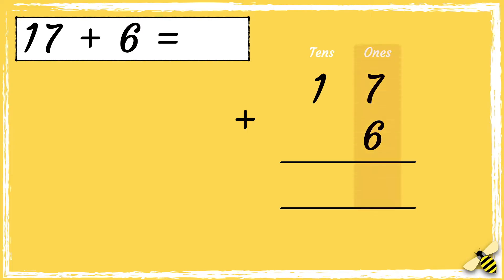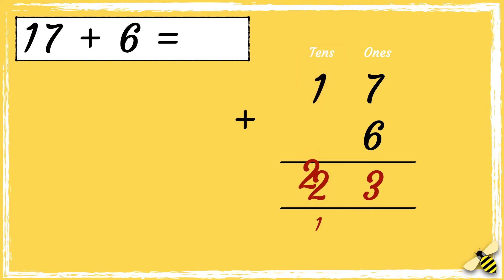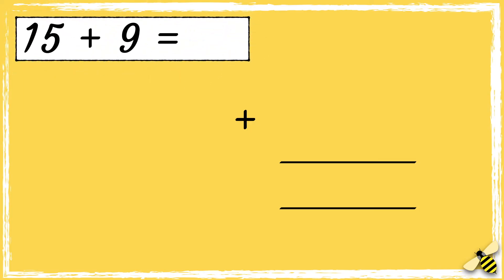When we add numbers using column addition we always start from the right hand side, so we're starting with the ones. Seven add six equals thirteen. We carry the ten below in the tens column. Now we need to add the digits in the tens column, not forgetting the ten we carried over. One add one equals two, so we have two tens and three ones, so the answer is 23.